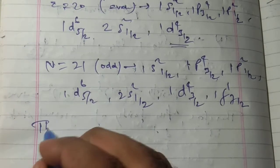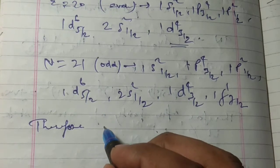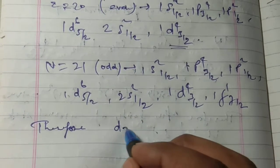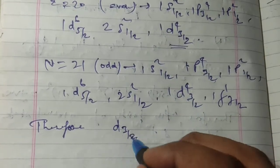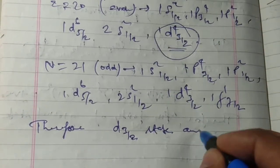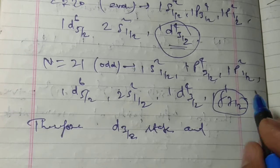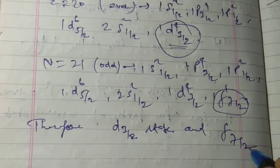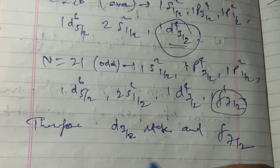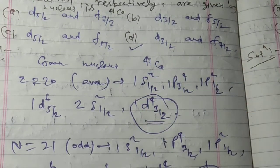Therefore, the last proton occupied the d3/2 state and the last neutron occupied the f7/2 state. So the correct option is D.